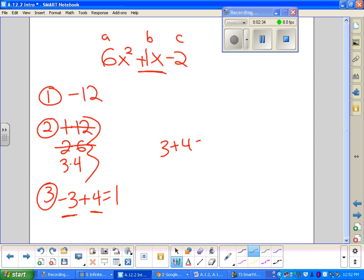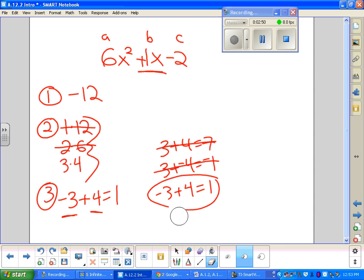So you know, 3 plus 4 is 7. That's no good. 3 plus negative 4 is negative 1. That's no good. Negative 3 plus 4 is 1. That's what I want. So I have to go through all those to find out what the right combination is. You need to be willing to do that.